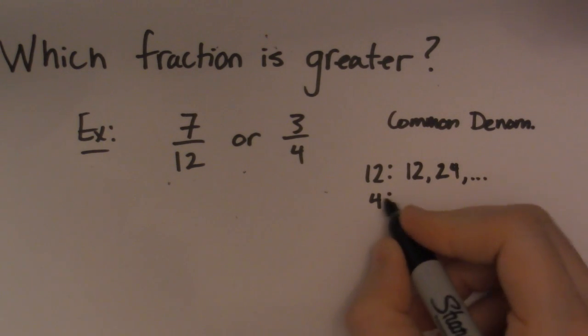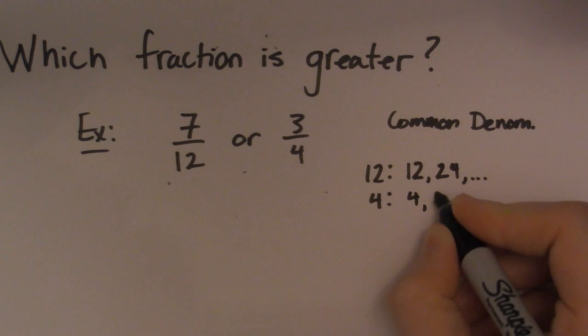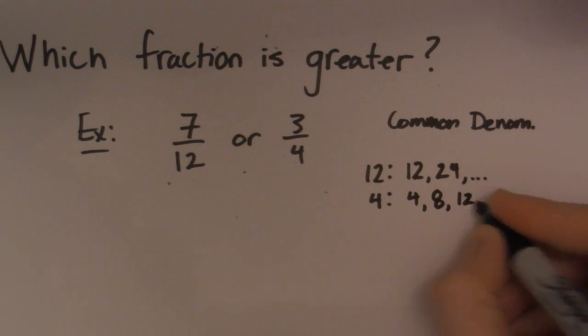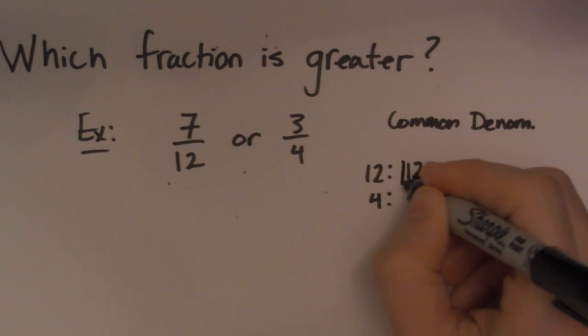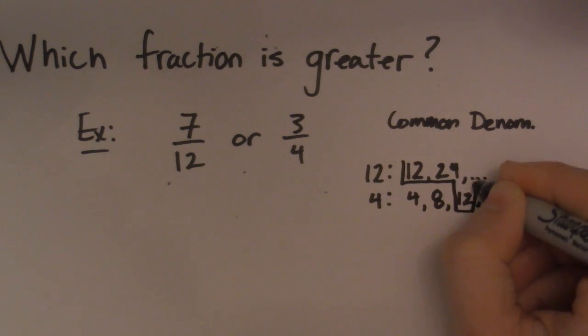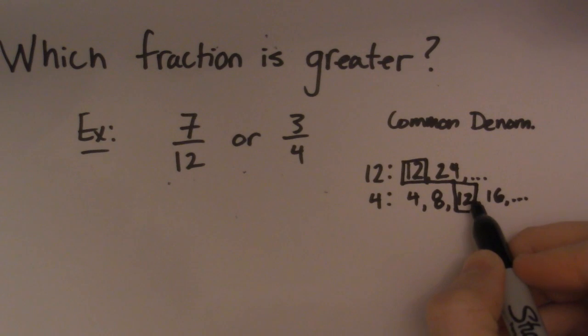So then we start with, again, we'll start with 4. We'll add another 4 which is 8. Then we'll add another 4 which is 12. Then we'll add another 4 which is 16. So as soon as you get something to repeat in this list, that is your common denominator. So right there, 12 and 12. So that must be my common denominator.